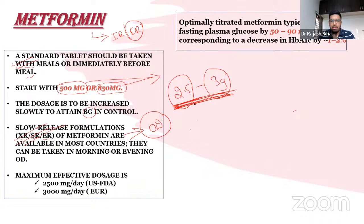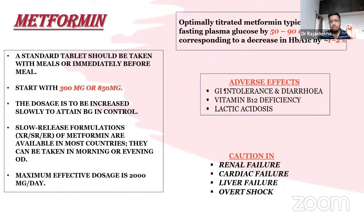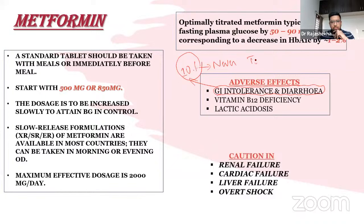Knowing the maximum dose is important for exams and clinical practice. Metformin is a modestly efficacious drug — it reduces fasting plasma glucose by 50–90 mg/dL with a corresponding HbA1c reduction of up to 1%. The main adverse effect is GI intolerance and diarrhea, especially on initiation or dose escalation. Around 10% of patients will never tolerate metformin at any dose.